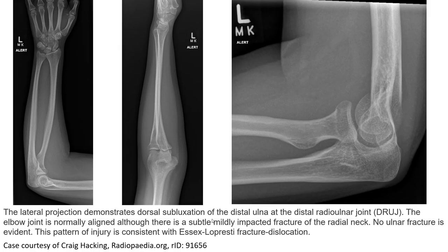Another example: the lateral view demonstrates dorsal subluxation of the distal ulnar head at the distal radioulnar joint. Although there is a subtle impaction fracture of the ulnar neck, no radial fracture is evident. The spiral configuration is consistent with an Essex-Lopresti fracture dislocation.